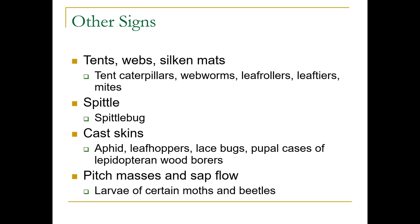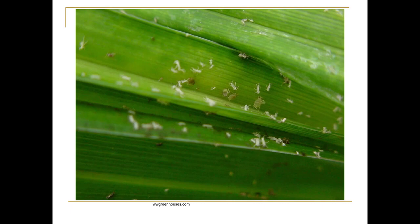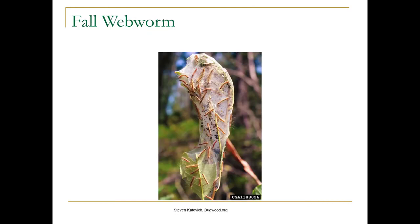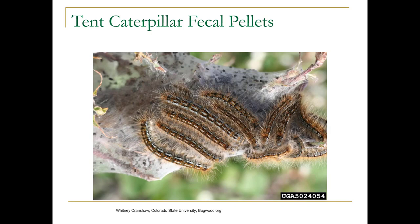Other signs you might see are tents, webs, mats — from tent caterpillars, webworms, leaf rollers, leaf tiers. We're going to talk about mites later. Spittle bug is going to start showing up here. Cast skins are what's left behind from insects because they have exoskeletons — they have to molt as they grow. You may also see pitch masses and sap flow, which might be from certain moths or beetles feeding on wood. Here we've got some aphids, and those little white things are the cast skins from aphids. Here's the tent from fall webworm, and here's the tent from tent caterpillar — you can see those black pellets in there are the fecal matter.